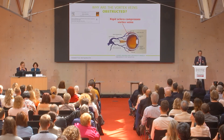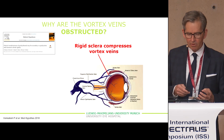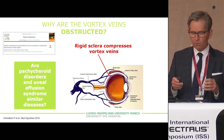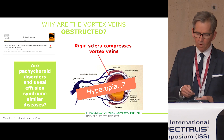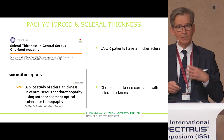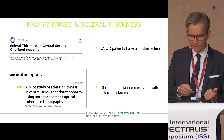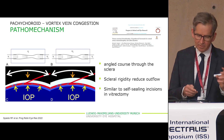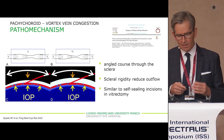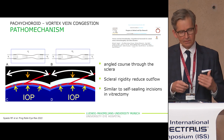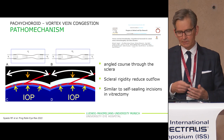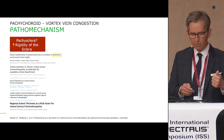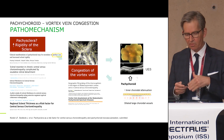Another question is why are the vortex veins compressed? The current idea is that it's the rigid sclera which compresses the vortex veins, similar to patients with uveal effusion syndrome who also have a thick sclera. Both diseases often appear in patients with hyperopia. It has been proven that central serous chorioretinopathy patients have a thicker choroid and that there's a relationship between choroidal thickness and scleral thickness. Another probable pathomechanism is that we have an angled course of the choroidal veins through the sclera, similar to self-sealing incisions in vitrectomy, which also compresses the veins. In summary: a thicker sclera with high rigidity leads to compression of the vortex veins, congestion, and then to the pathophysiologic changes.